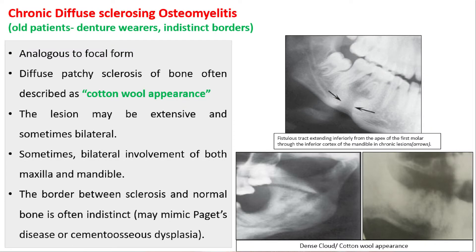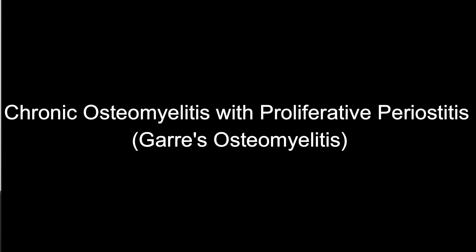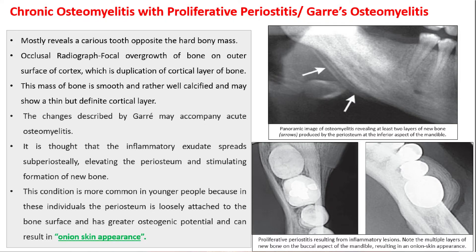In chronic diffuse sclerosing osteomyelitis, we see diffuse patchy sclerosis of bone, often described as a cotton-wool appearance. The lesion may be extensive and sometimes bilateral, involving both the maxilla and mandible. The border between sclerosis and normal bone is often indistinct — unlike the distinct borders seen in the focal form.